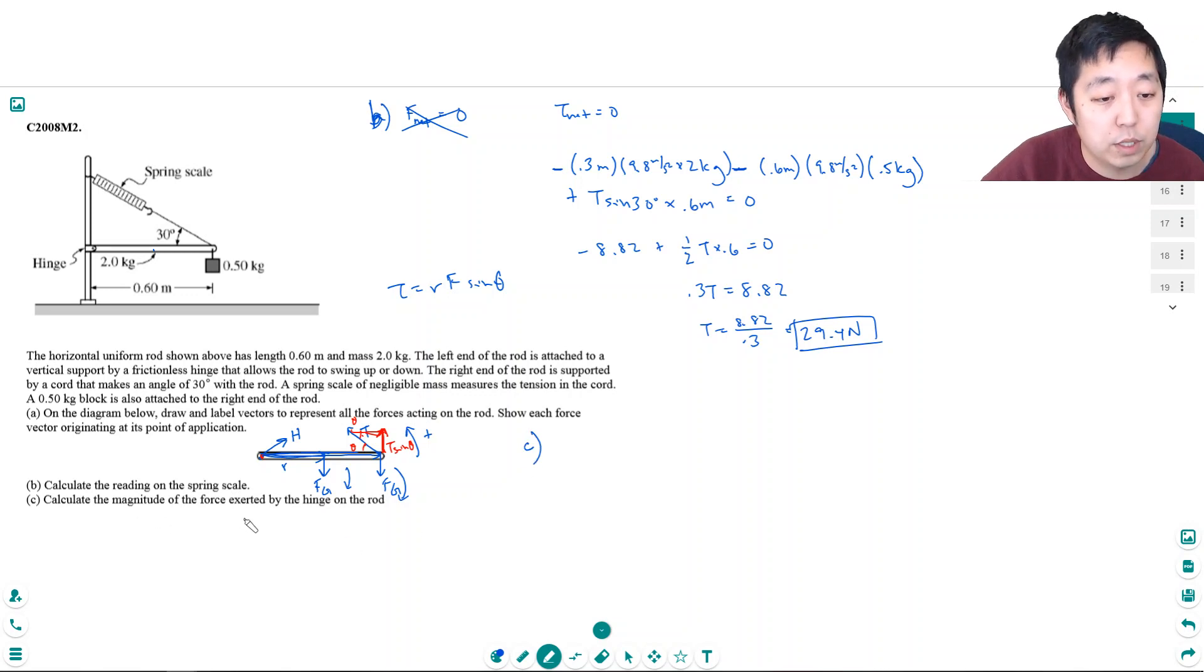And part C, calculate the magnitude of the force exerted by the hinge on the rod. Okay, so now, now that I know t, the tension, now I can look at the net force.